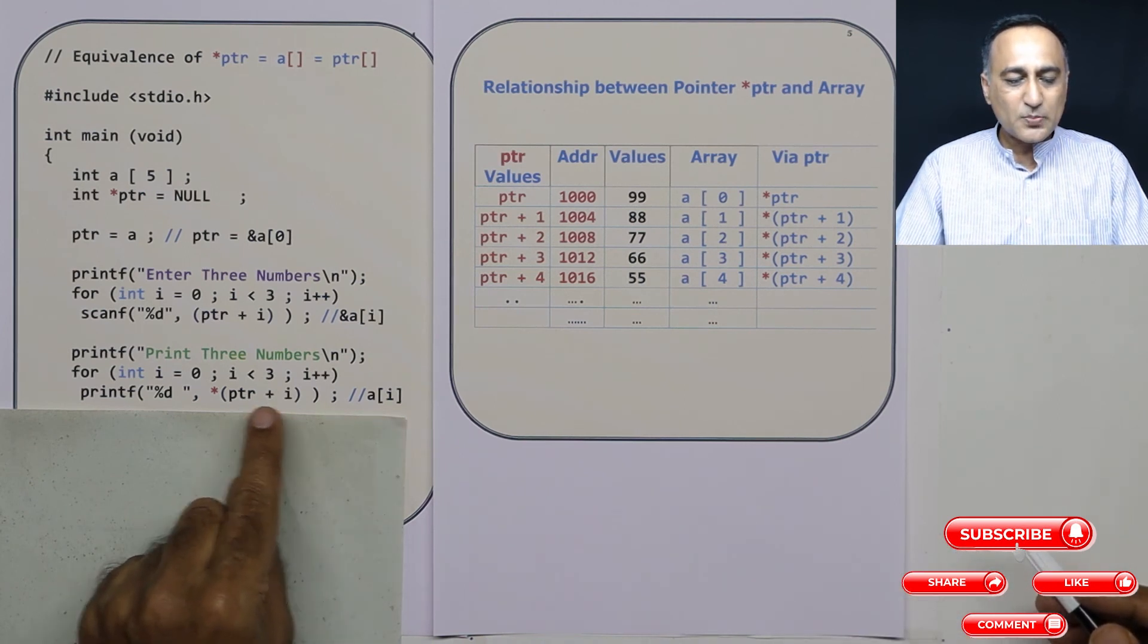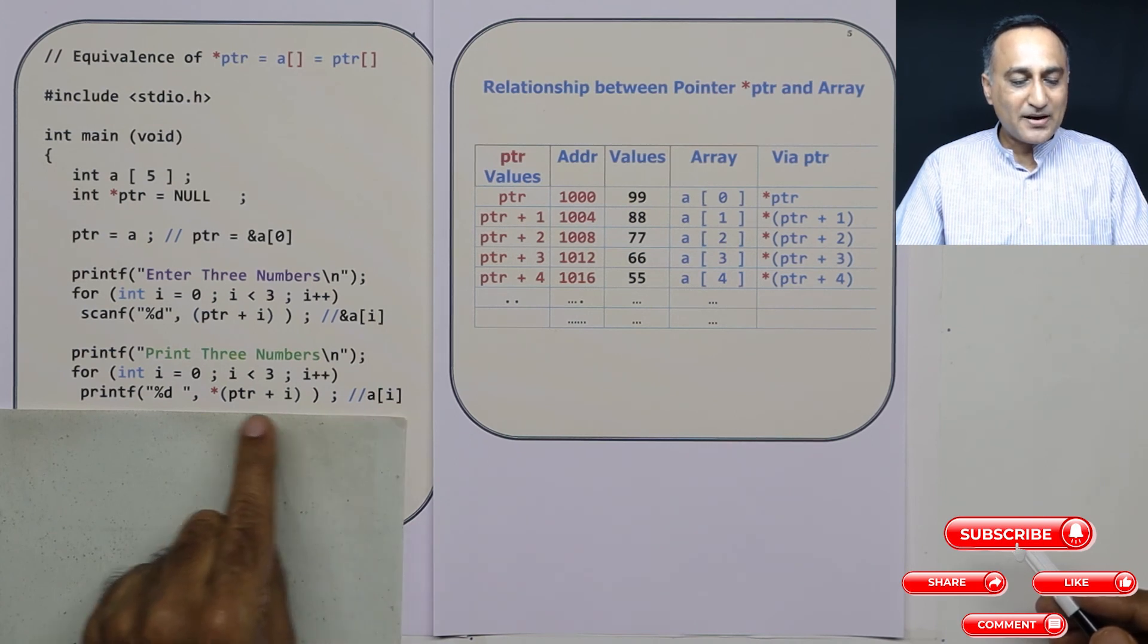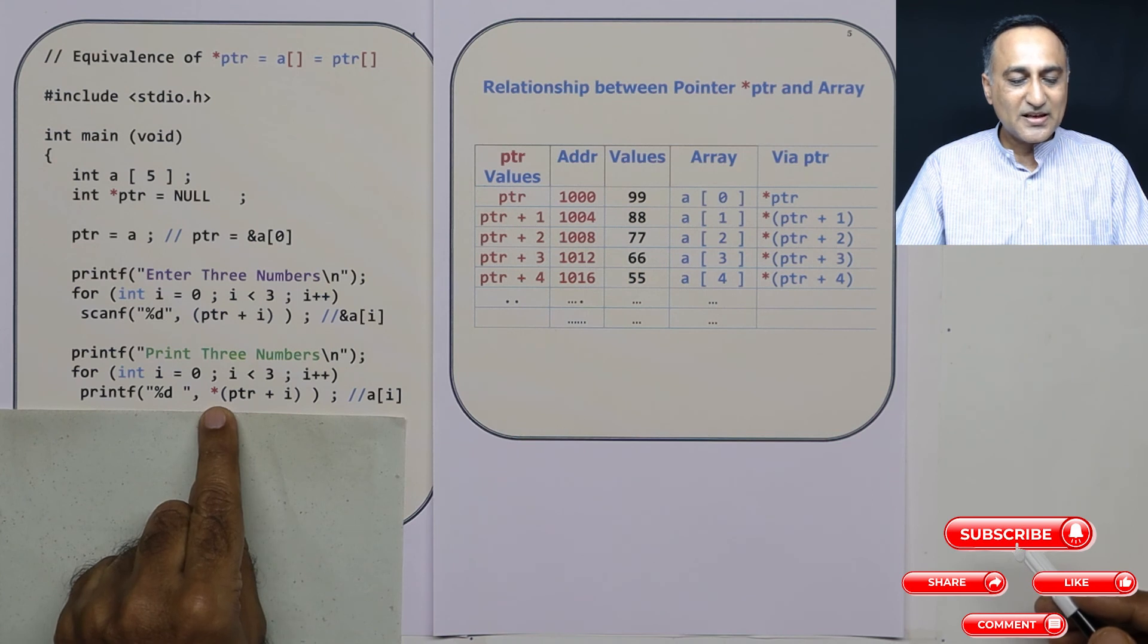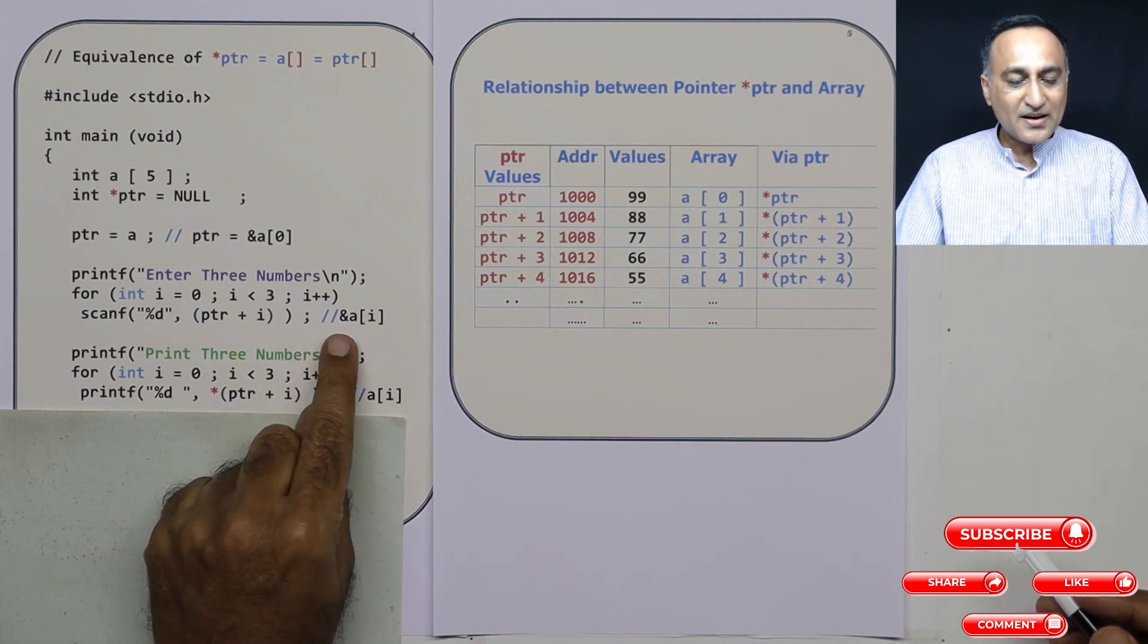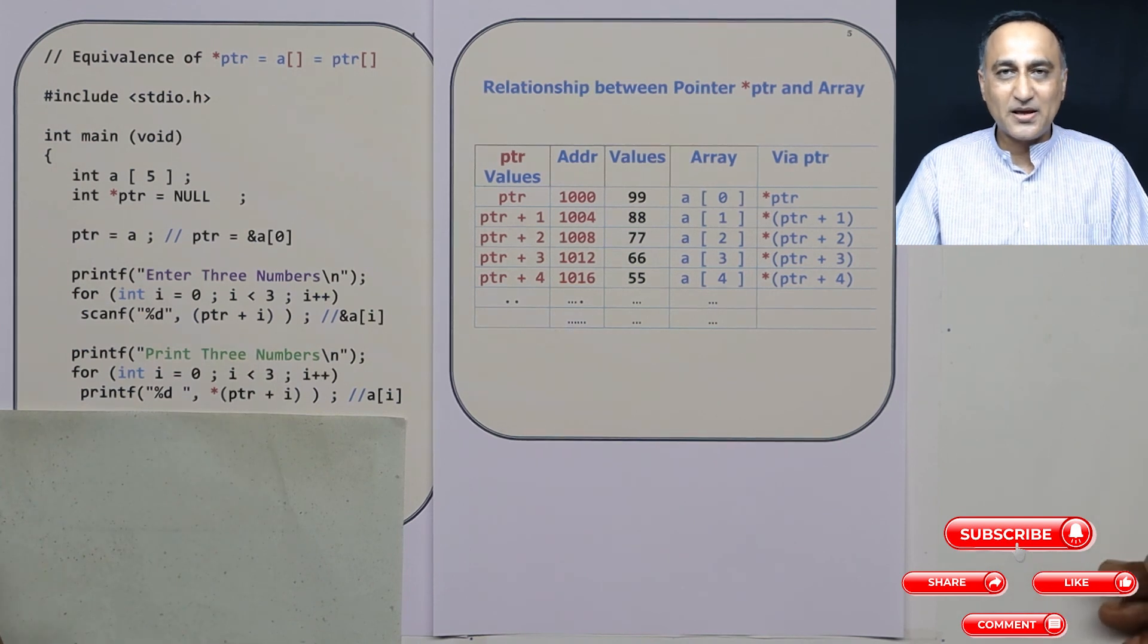Why can I use ptr[i]? When I say ptr[i], in place of a if I put ptr, the compiler converts that into this. So I can also say instead of address of a[i], I can simply say ptr plus i or I can say address of ptr[i], which all mean the same thing.